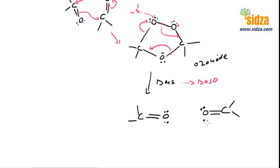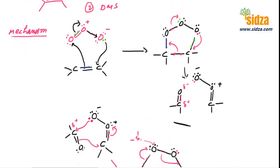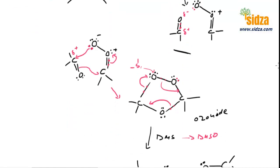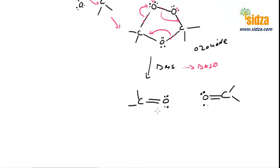So these are the two compounds you get when you do reductive ozonolysis. First, you react the alkene with ozone — looking at the mechanism again — you get the ozonide. And from the ozonide, you get these two carbonyl-containing compounds.